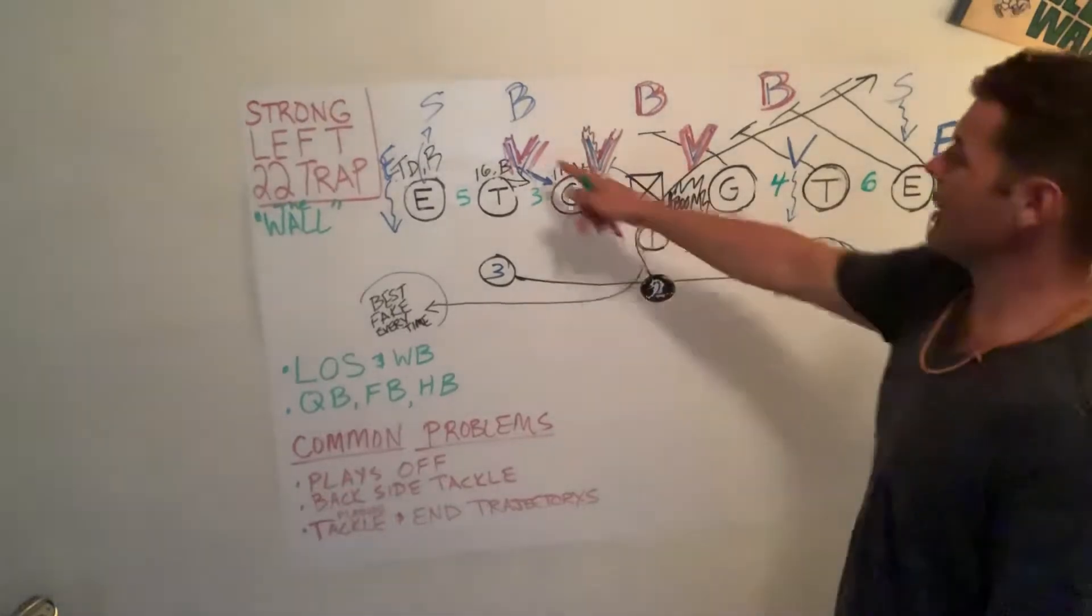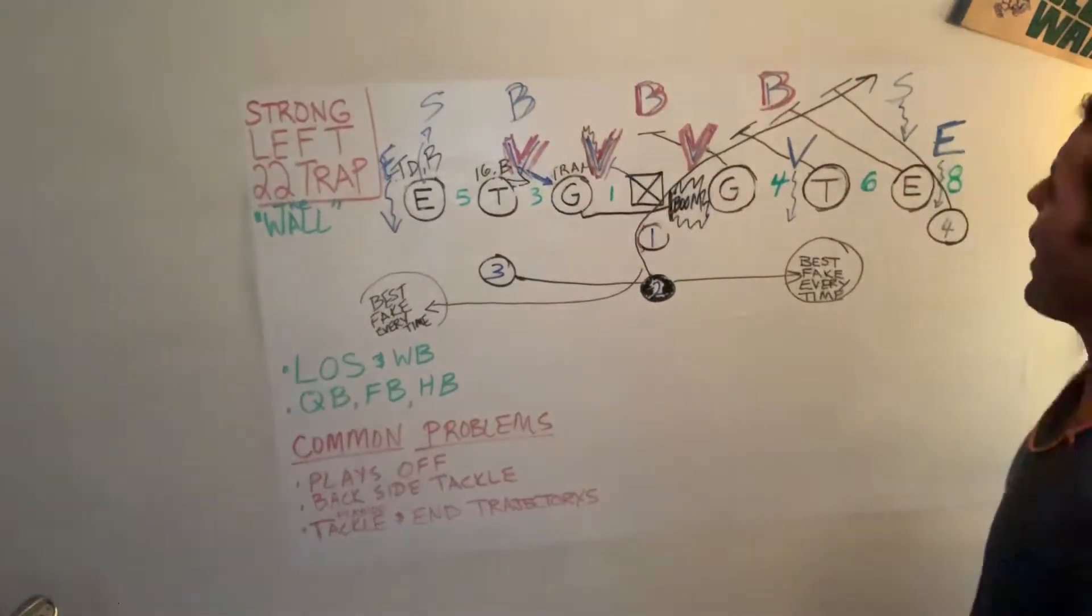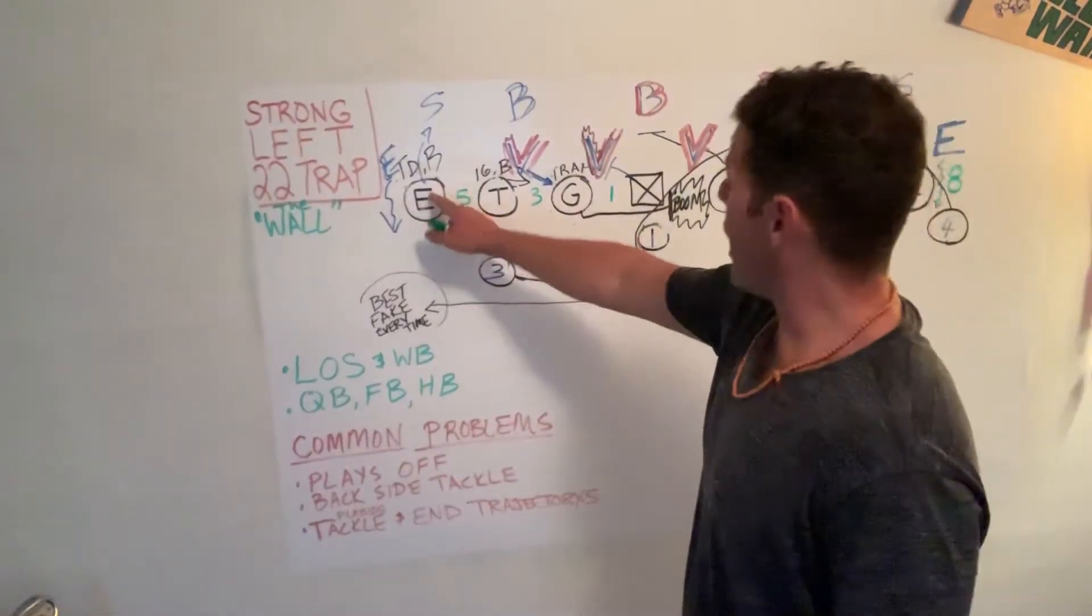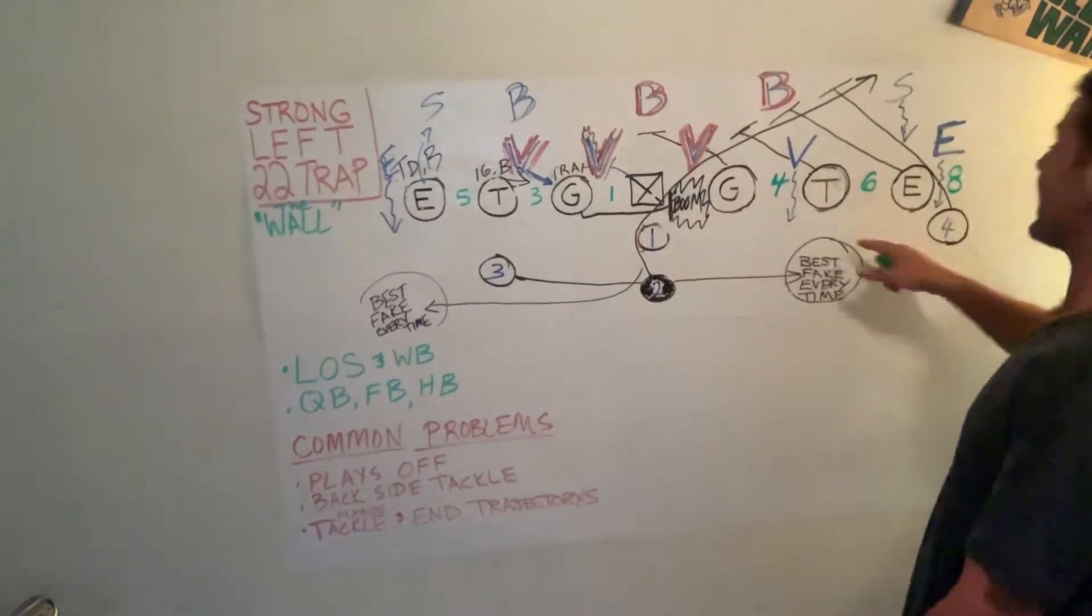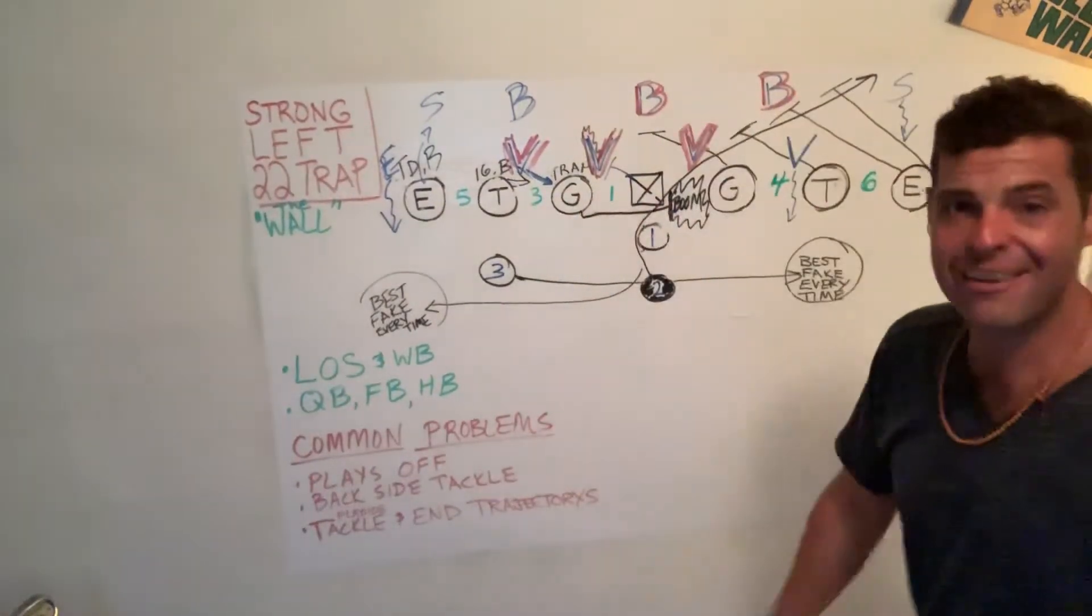We're really only blocking one, two, three, four, five. Five guys. We're blocking five guys. We got one, two, three, four, five, six, seven, eight. We got eight guys in the mix to block five. Five.